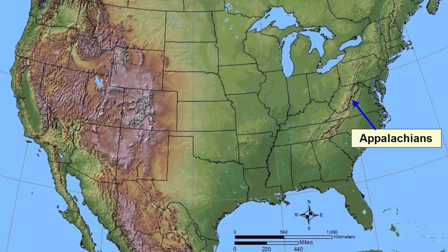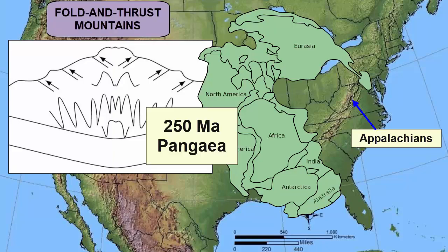We see this process happening today in the Appalachian Mountains on the east coast of the United States. These mountains were the Himalayas of the past, forming 250 million years ago when all Earth's continents converged and combined into one supercontinent, Pangaea. That collision produced large fold and thrust mountains that were later broken up and redistributed when Pangaea broke apart. Today, 250 million years after the Appalachians stopped forming, we see what's left over as erosion tears these mountains down.